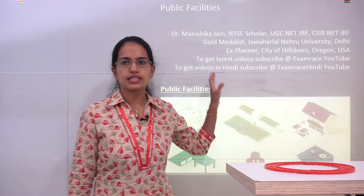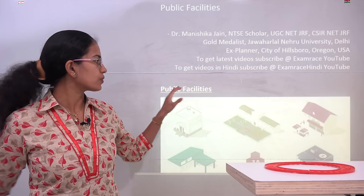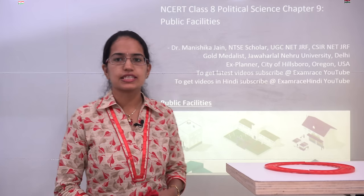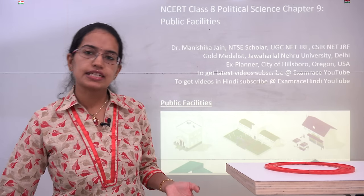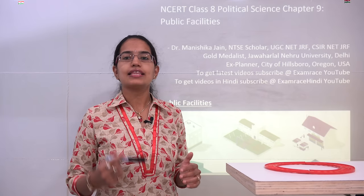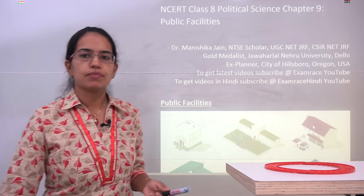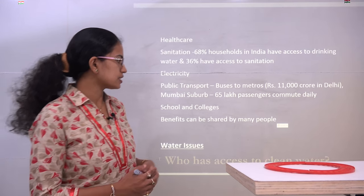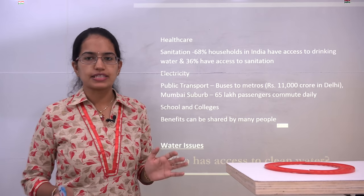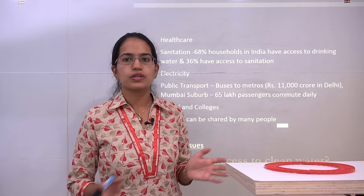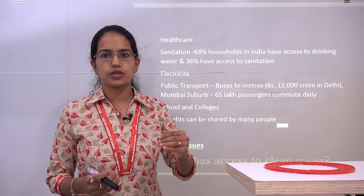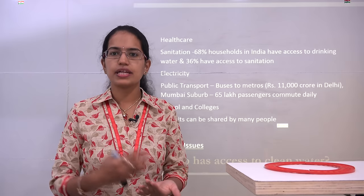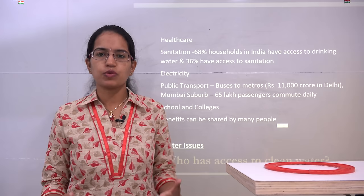Welcome. We will start with NCERT Class 8, the 9th chapter, that talks about providing public facilities to the common people. Let's understand what the various public facilities are. A public facility is one that can be shared by many people and is for common use. For example, transportation systems, healthcare, school education, and electricity all come under public facilities because they are meant for the public good, and the government takes the responsibility of providing them.